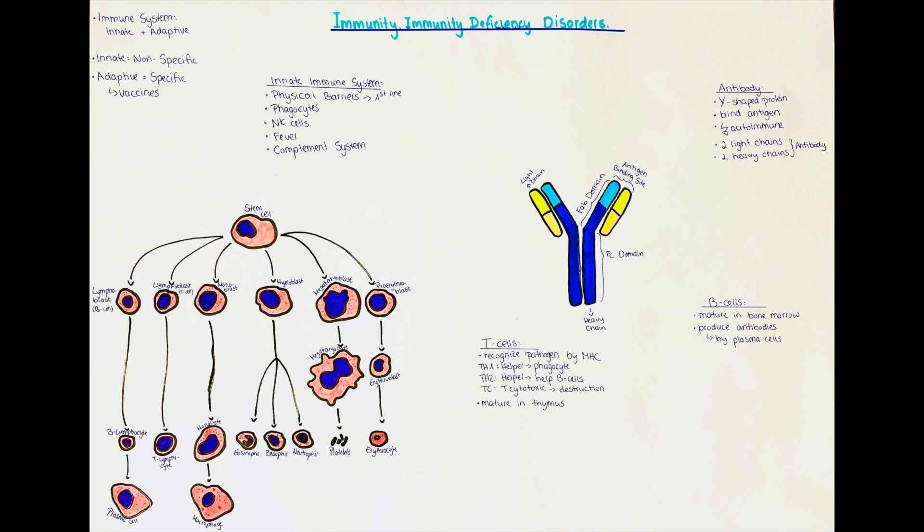A key thing to remember about the innate immune system is that it is non-specific. What we mean by non-specific is that it defends against essentially any pathogen and it does not cause a better response after encountering a specific pathogen successively several times in a row.